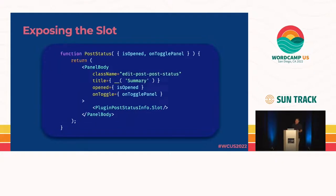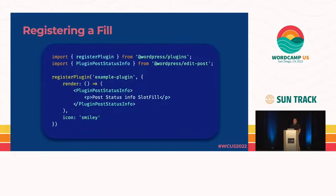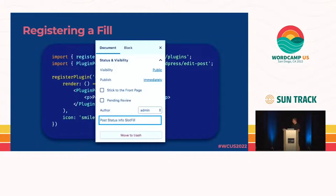Once that's been built, we can expose it inside the UI. In a simplified example, the PluginPostStatusInfo slot is exposed inside the PostStatus component — that's where you see all the stuff about your post. When we register a fill, we import the PluginPostStatusInfo SlotFill from the edit-post package and wrap whatever we want to appear in that slot inside it. Once that renders, it would look like that.